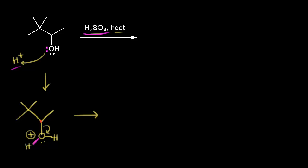Drawing the carbon skeleton with methyl groups, the carbon in red is a secondary carbocation — it's directly bonded to two other carbons in magenta — so it has a plus one formal charge. Next, we think about the possibility of a rearrangement: can we do anything to form a more stable carbocation? Just like the previous example, we could have a methyl shift.